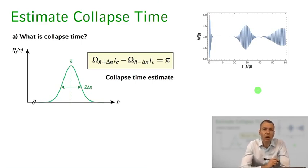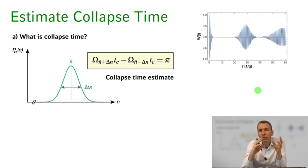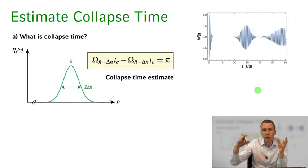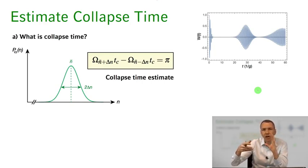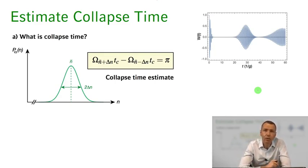Why does the collapse happen? The collapse occurs exactly at the point where the different Rabi oscillations run pi out of phase. When the phases of these different cosinusoidal oscillations run out of phase by pi, the Rabi oscillations no longer add up constructively — rather they destructively interfere, and we can see why the whole dynamics can vanish in that situation.